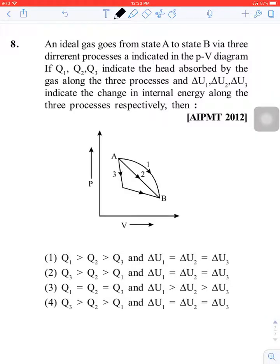An ideal gas goes from state A to state B through three different processes indicated in the PV graph. PV graph means three different processes.